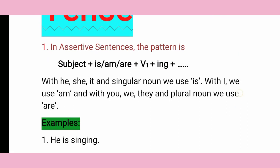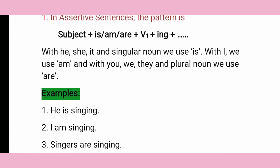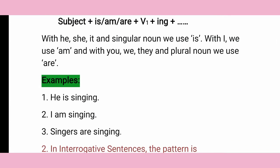Now, if you want to make a present continuous tense sentence, the rule is: Subject + is/am/are + V1 + ing + Object. The question is where to use is, am, or are. If your subject is he, she, it, or a singular noun, use 'is'. If your subject is 'I', use 'am'. If your subject is you, we, they, or a plural noun, use 'are'.